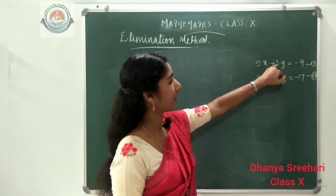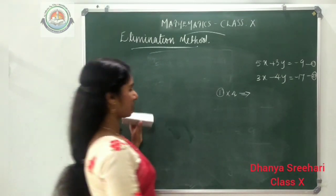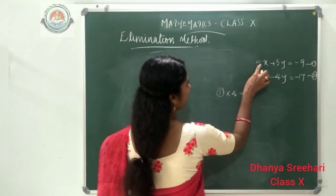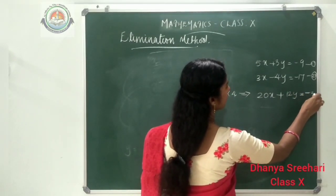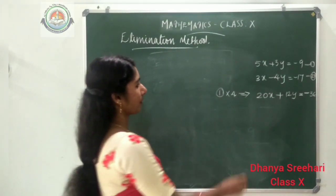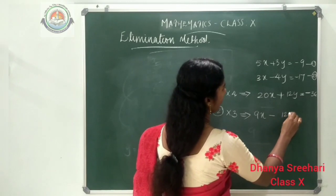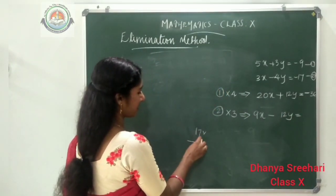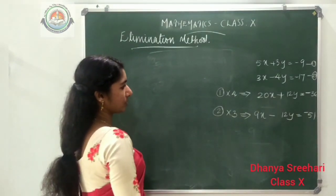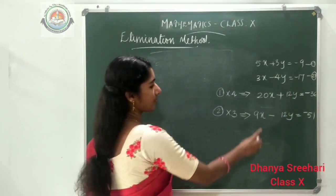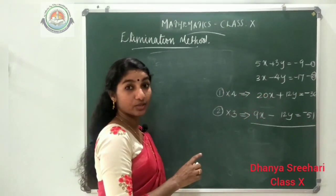Multiply the first equation by 4: 5x times 4 gives 20x, plus 3 times 4 gives 12y, equals minus 36. And multiply the second equation by 3: 3x times 3 gives 9x, minus 4 times 3 gives minus 12y, equals minus 17 times 3, which is minus 51. We now have two new equations: 20x plus 12y equals minus 36, and 9x minus 12y equals minus 51.